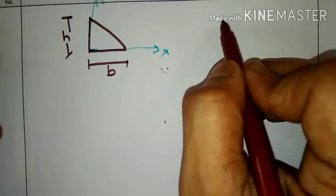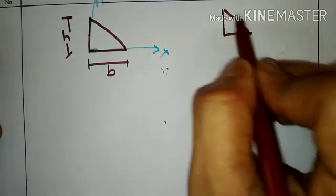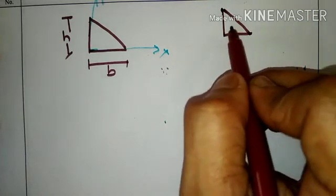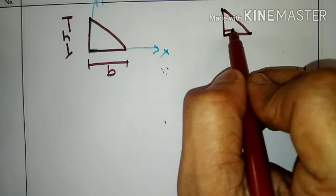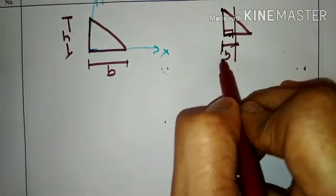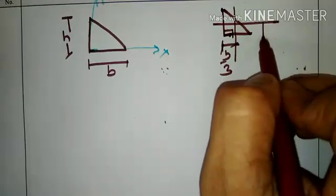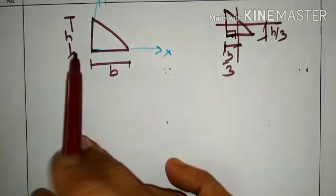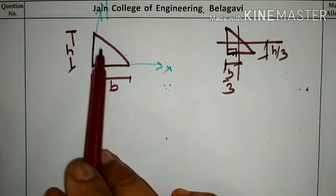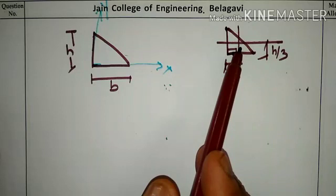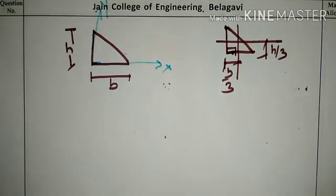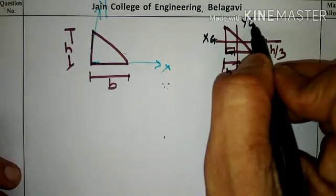A small recap: the centroid of the triangular section, which we derived during the session on centroid. The centroid of this particular triangular section along the X direction from the 90-degree angle will be at a distance of B/3. Along the height, it will be at a distance of H/3. Here we have a global X and Y axis, and also an axis passing through the centroid called XG and YG.